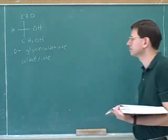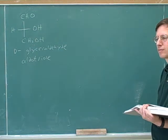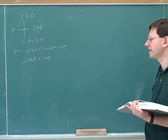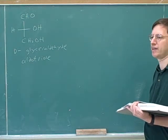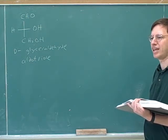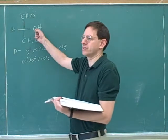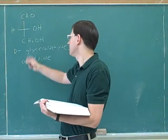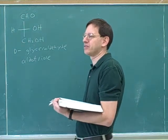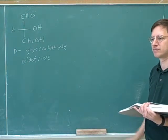If it just says aldose, does that mean it's six carbons? No — if it just says aldose, that means it's an aldehyde-based sugar and they haven't told you how many carbons. Aldotriose is a type of aldose, and the aldoses are all of the sugars that are based on aldehydes.